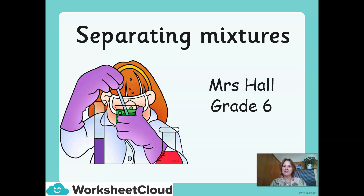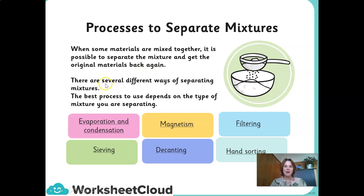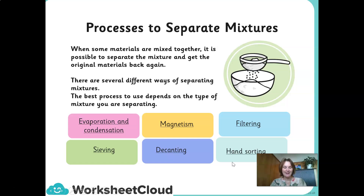Today's lesson is on separating mixtures. There are a number of different processes that we use to separate mixtures. When some materials are mixed together, it is possible to separate the mixture and get the original materials back again. The best process to use depends on the type of mixture. Today we are going to be looking at evaporation and condensation, magnetism, filtering, sieving, decanting, and hand sorting. Are you ready, Grade 6ers? Let's get going.